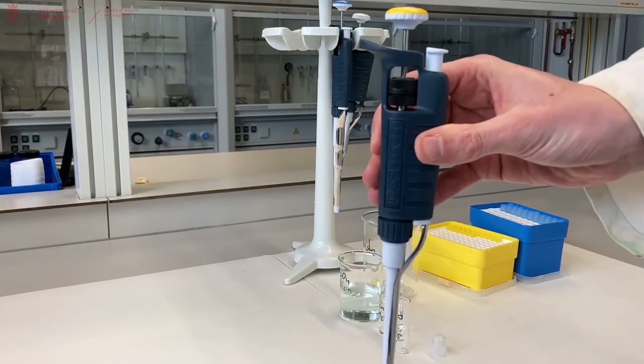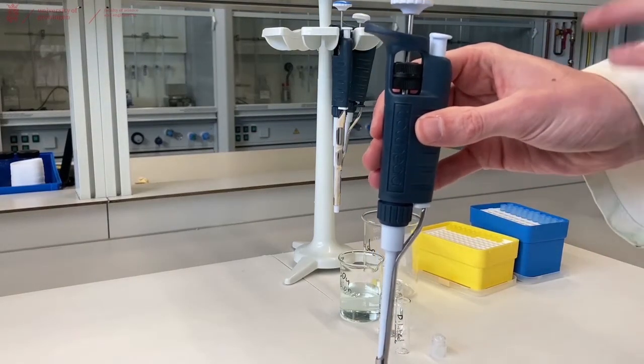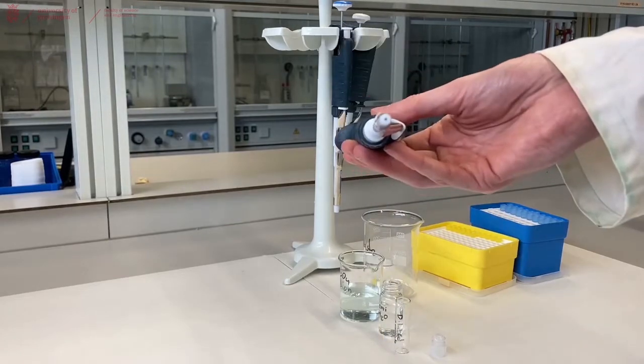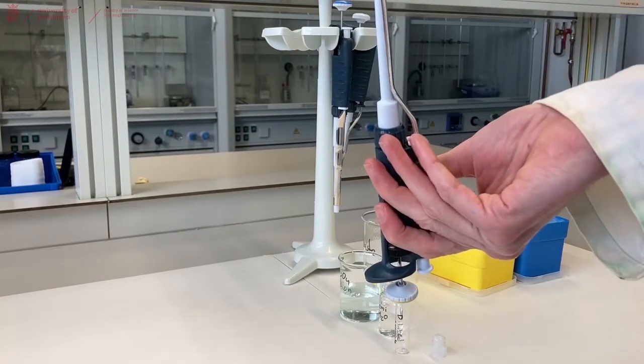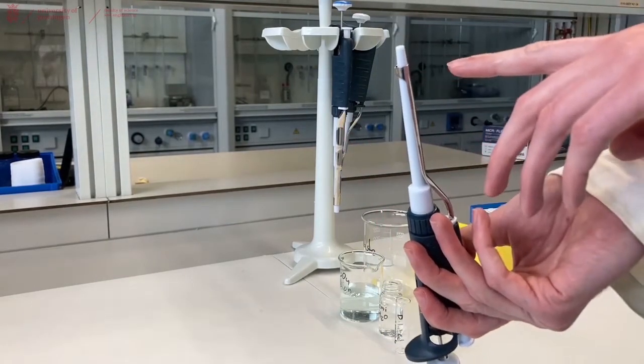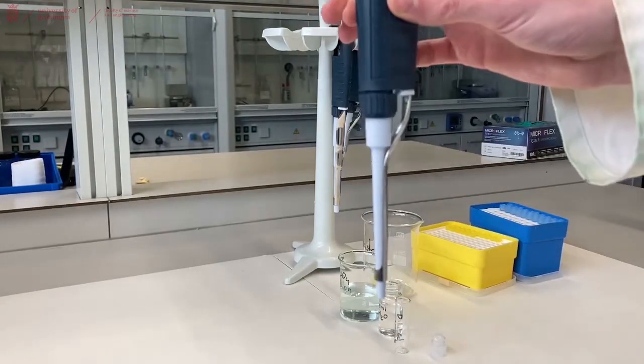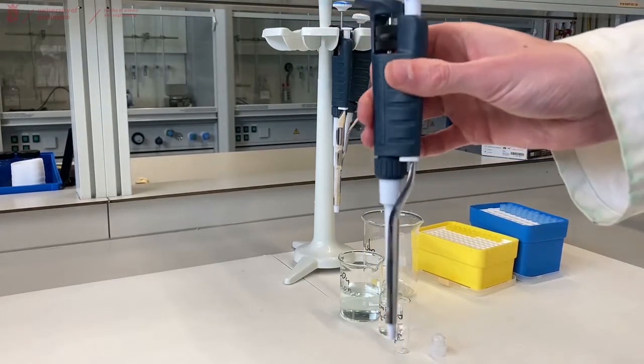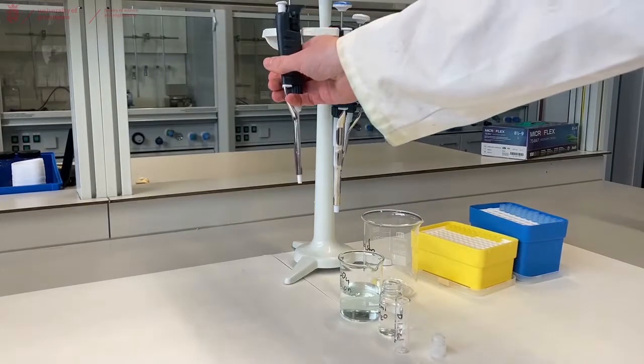What you should never do is, when there's any liquid involved, hold the pipette sideways or upside down, because then the liquid will go into the mechanism and slowly destroy the pipette. Always keep your pipette upright, and when you're done hang it back on the stand.